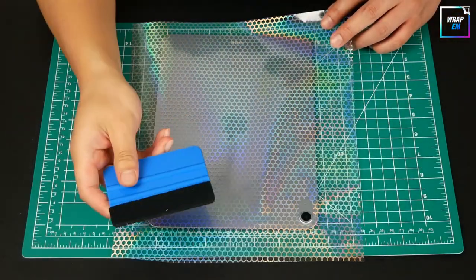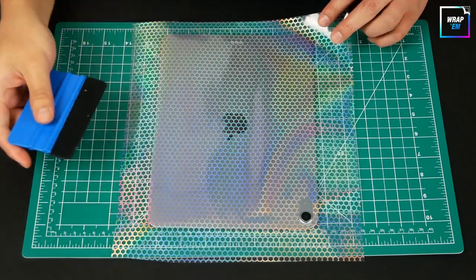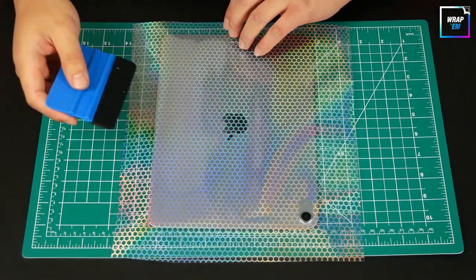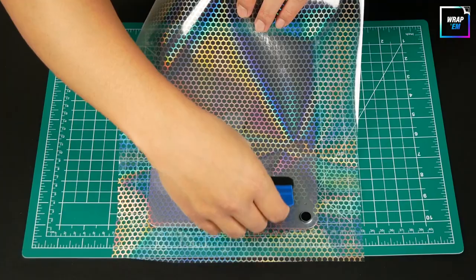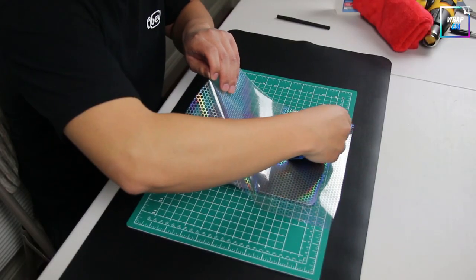Now grab a squeegee and start squeegeeing with a good amount of pressure. If you see any wrinkles or bubbles it's totally okay to lift the vinyl and lay it again.